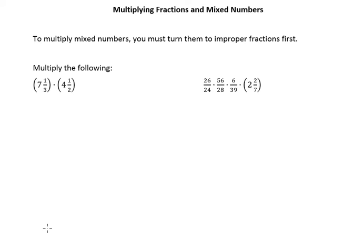We need to turn it into an improper fraction. So the first thing, when I see 7 and 1 third times 4 and 1 half, both of these need to be improper fractions. So we take 7 times 3 is 21, plus 1 is 22, so we have 22 thirds, times 4 and 1 half becomes 4 times 2 is 8, plus 1 is 9 halves.